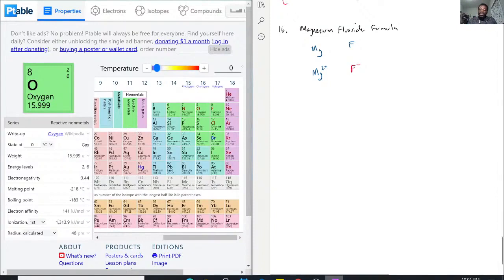So how do you balance it? We need 2 of these fluorines. So in order for this to work, we need MgF2. This right here would be the magnesium fluoride formula.